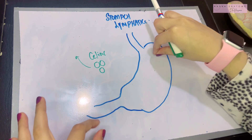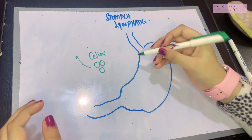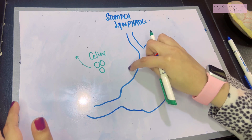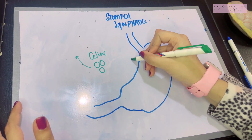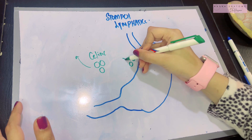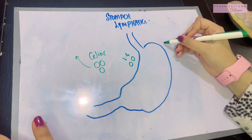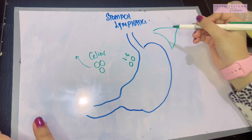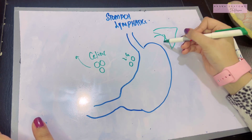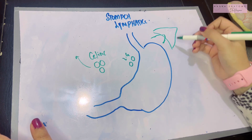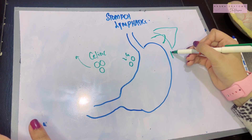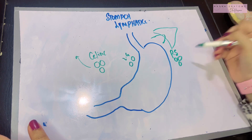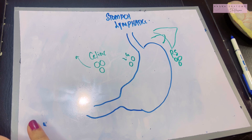Celiac nodes are where the eventual lymph of the stomach should end up. Now let's draw some basic lymph nodes along this area. There was the left gastric artery, so similarly named, the left gastric nodes lie right over here. Over here, the spleen lies and the tail of the pancreas is attached to the spleen, so the best name to give the lymph nodes lying here would be the pancreatic splenic lymph nodes.